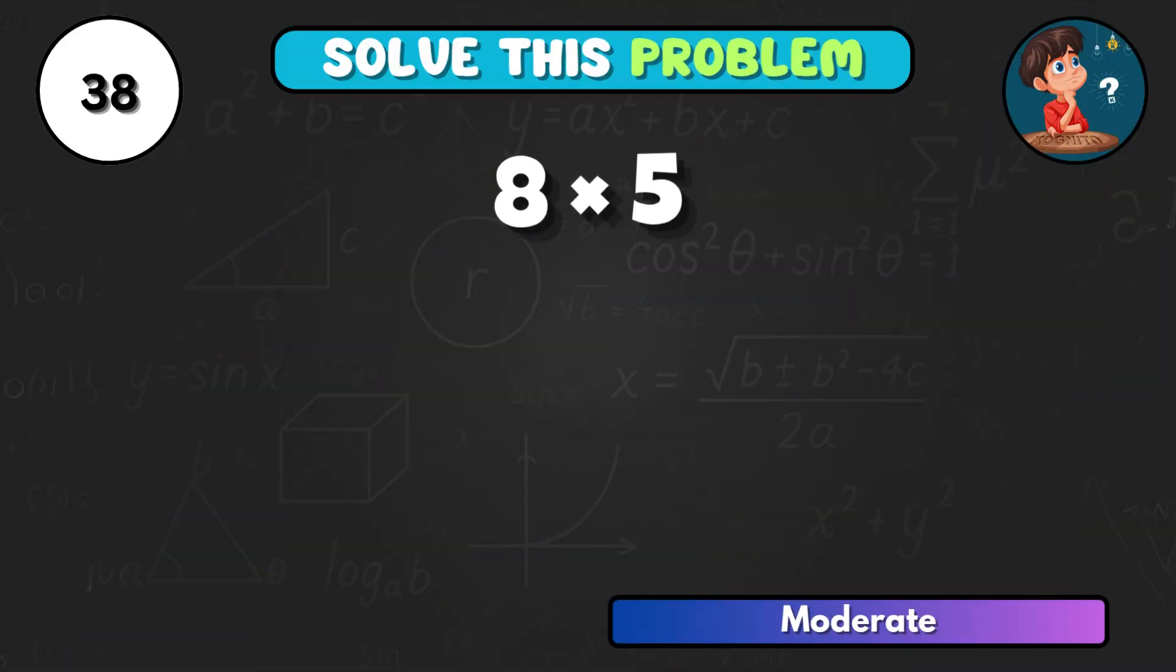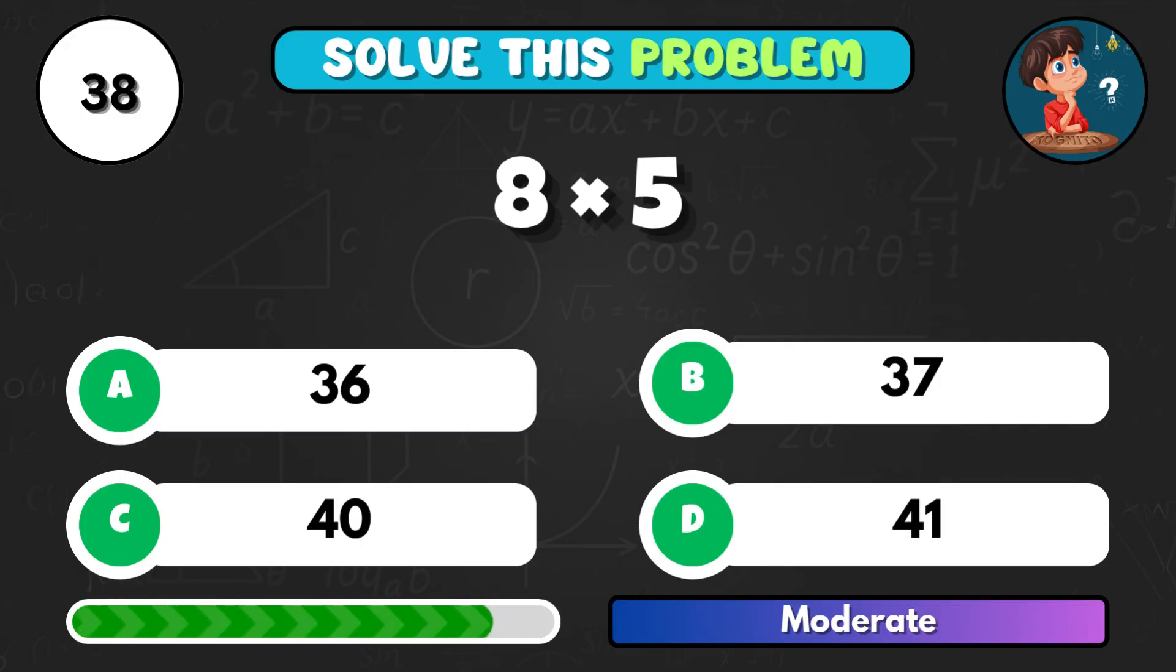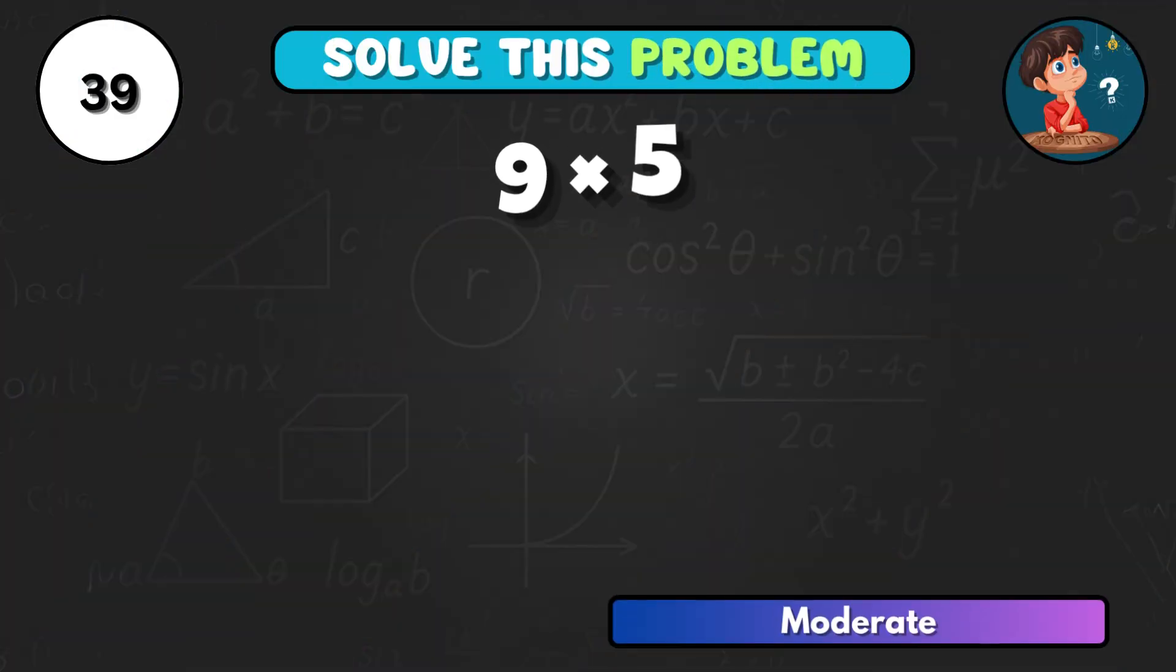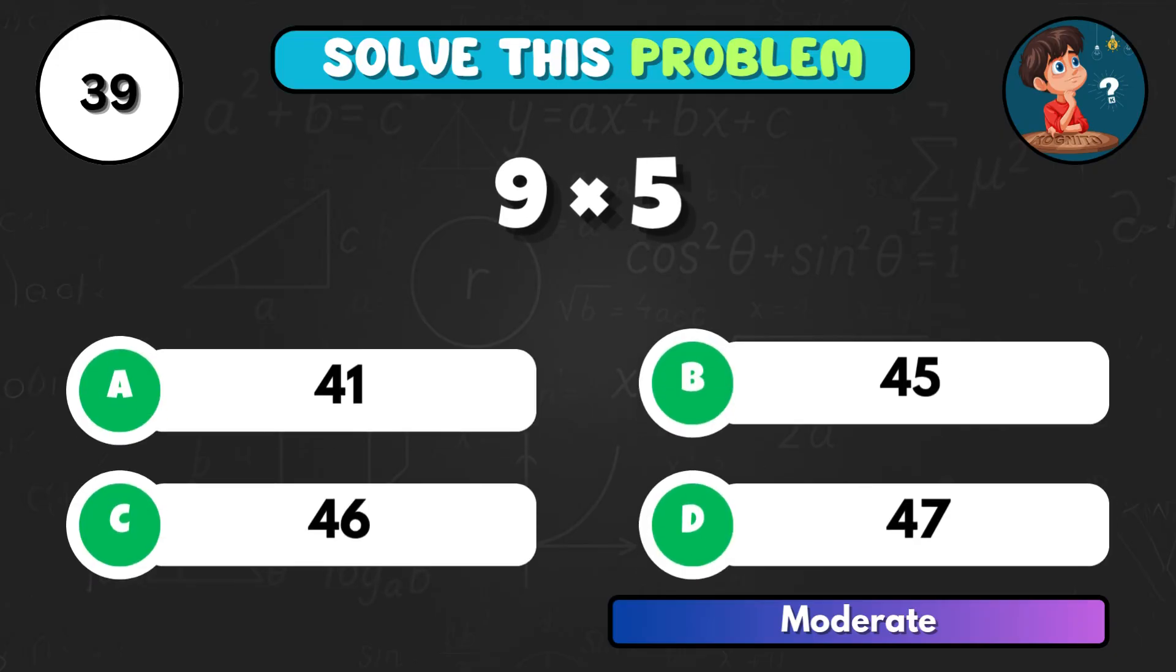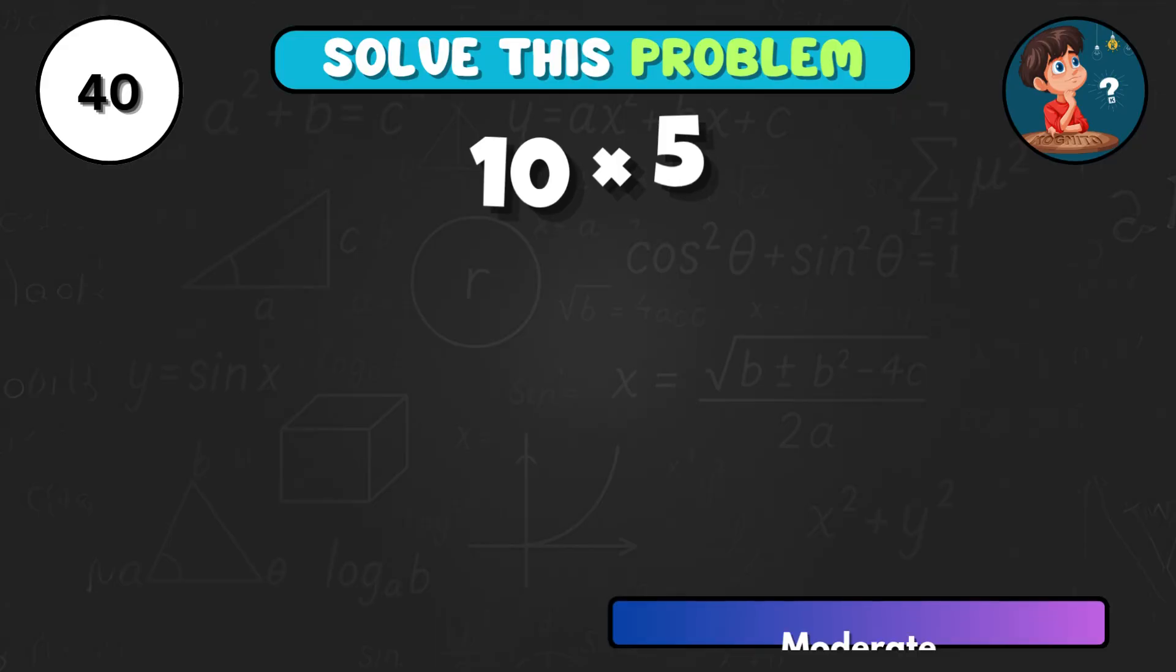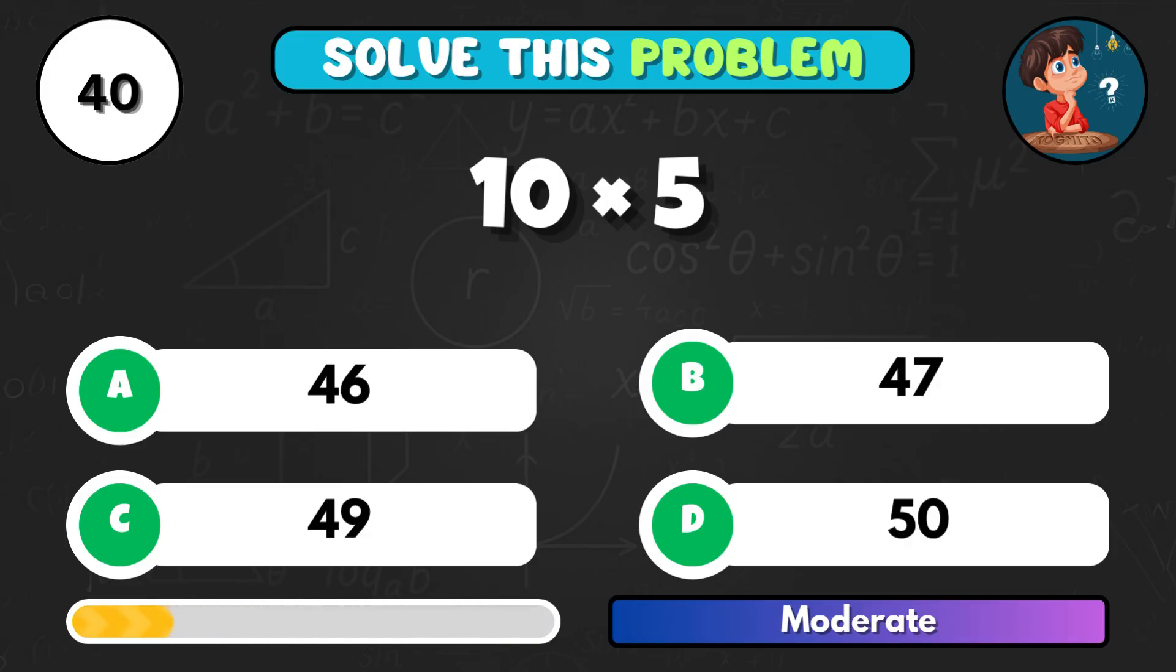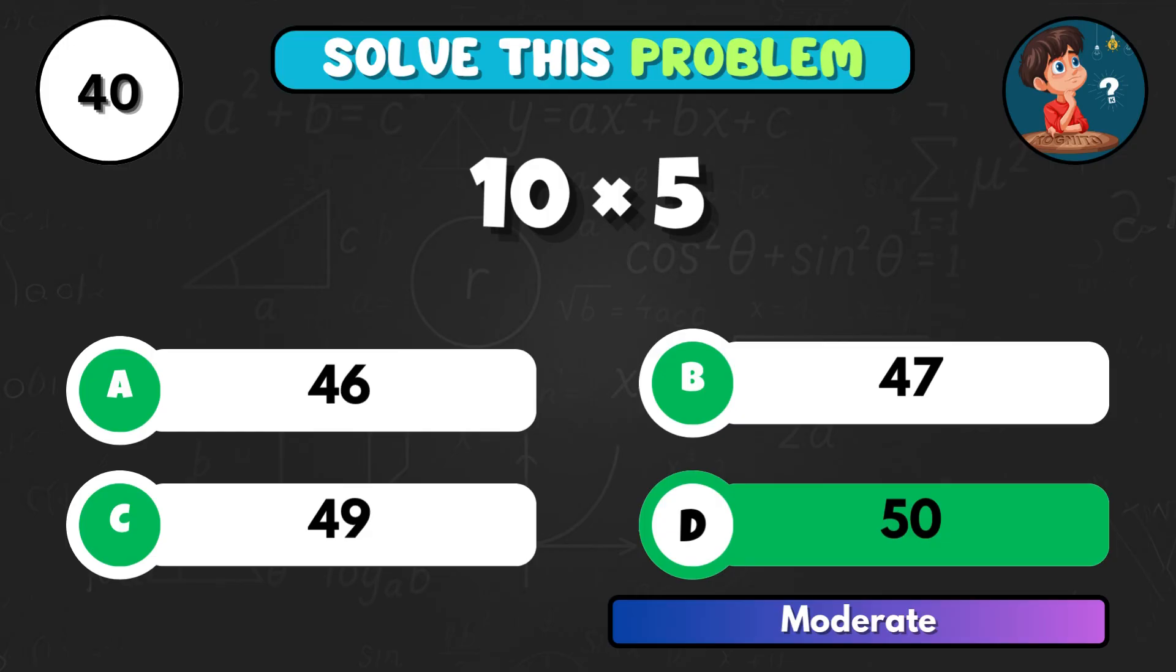8 times 5, what's your product? Correct choice C, giving 40. 9 times 5, how much is that? Option B, and the result is 45. 10 times 5, what's your total? Correct letter D equals 50.